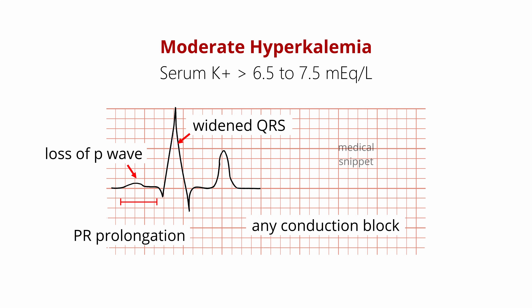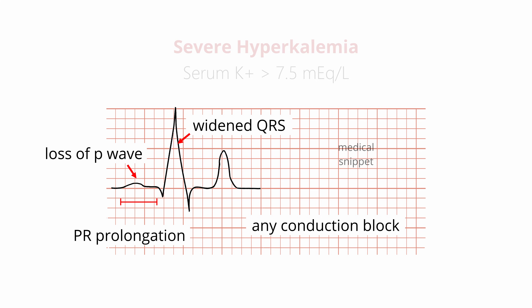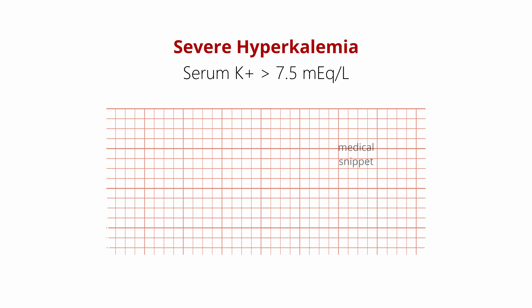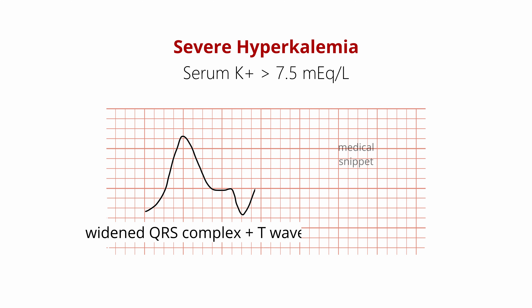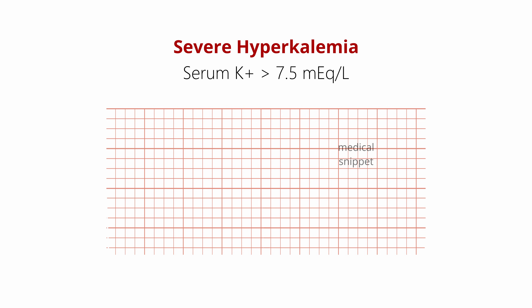When hyperkalemia is very severe, the widened QRS complexes merge with the corresponding T-waves and the ECG looks like a sine wave pattern. If potassium further rises, the heart arrests in asystole.